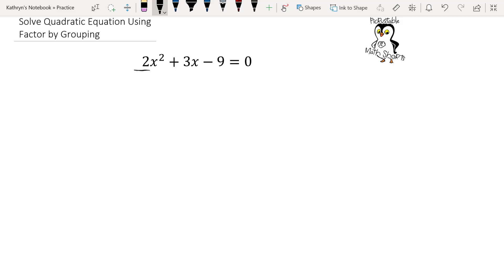First thing that we're going to do is we're going to think of numbers that multiply to 2 times negative 9. This is called the grouping method, sometimes it's called the AC method because we're using A and C.